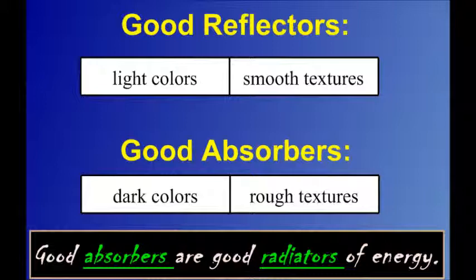There are some characteristics of a material that will determine whether it's going to be a good reflector or a good absorber. Good reflectors have light colors and smooth textures. Good absorbers have dark colors and rough textures. Materials that are good absorbers of electromagnetic energy are also good radiators of electromagnetic energy. This means that a dark colored object, for example, will heat up quickly in sunlight, but it will also cool off quickly after sunset because it rapidly radiates that electromagnetic energy back into the environment.